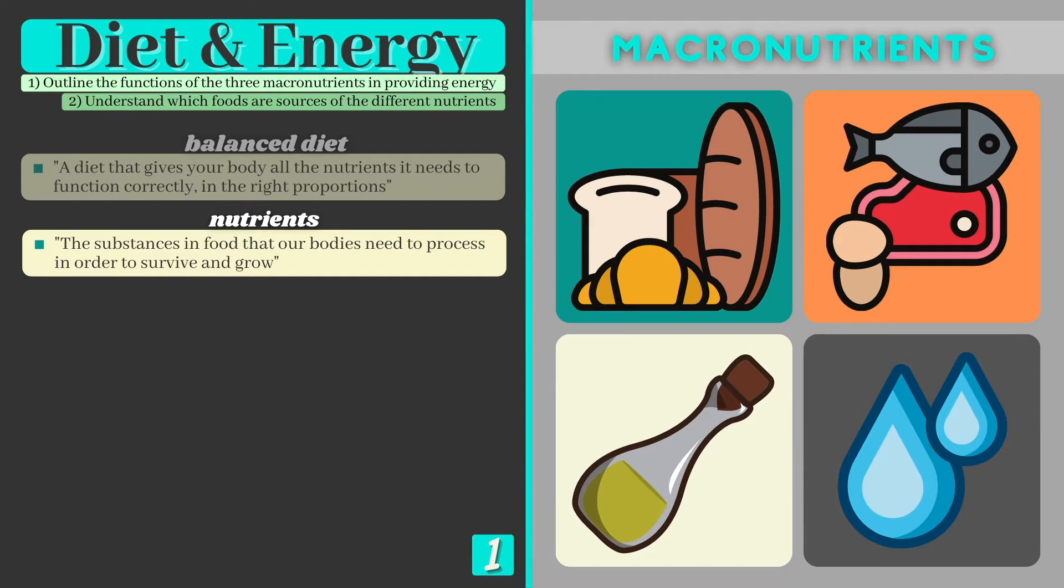These major nutrients are called macronutrients and we'll study the characteristics of each in order and take a look at their roles within the body.